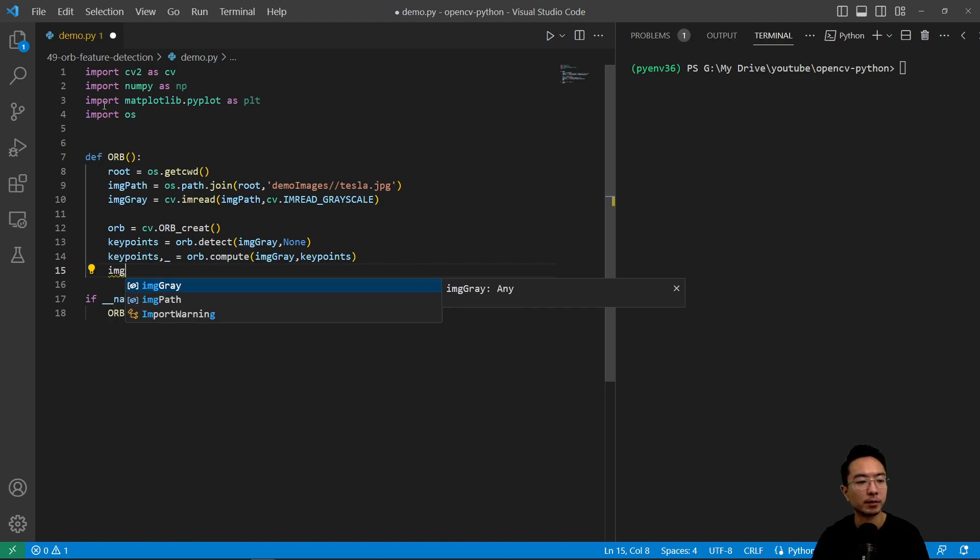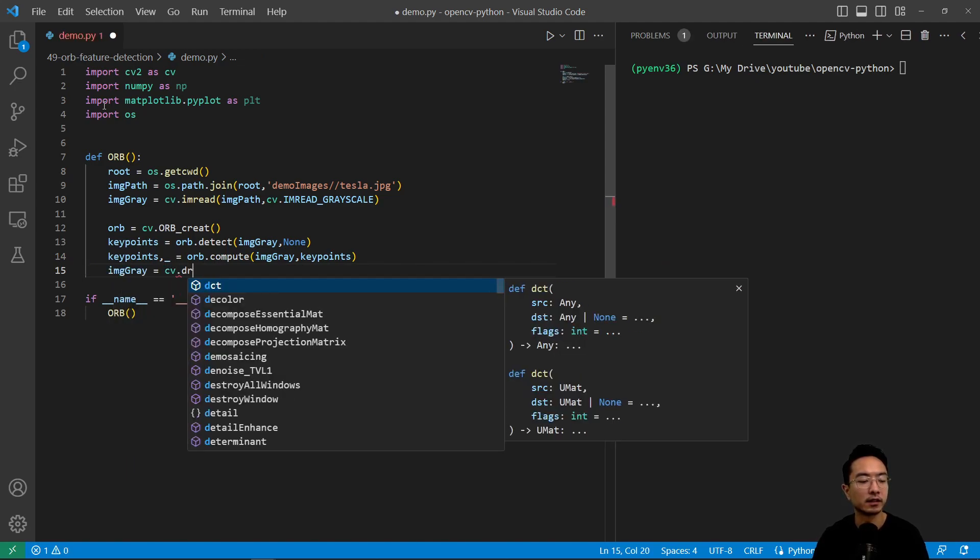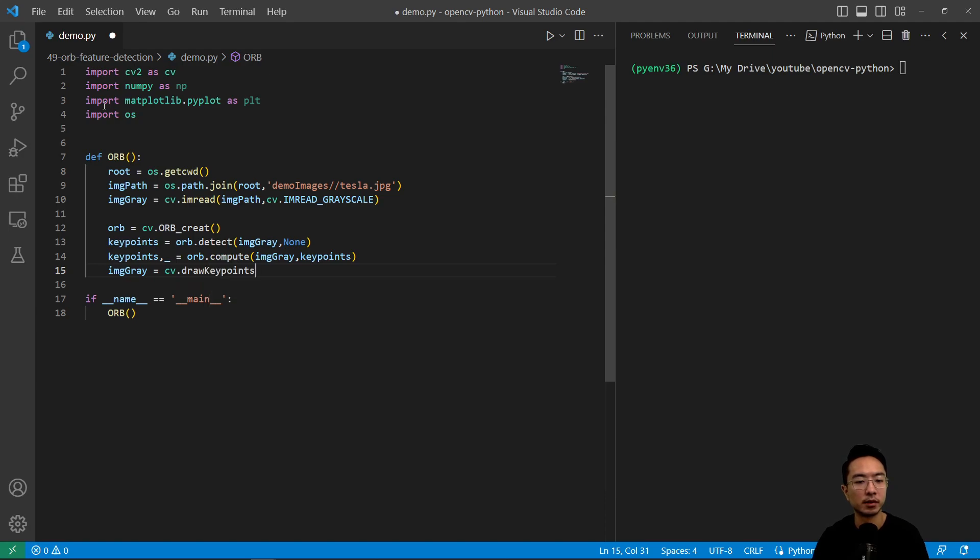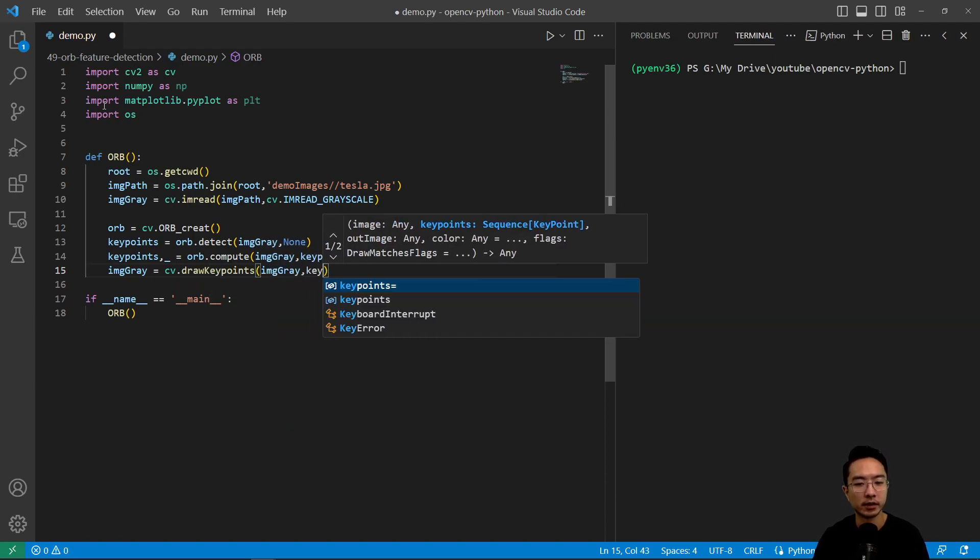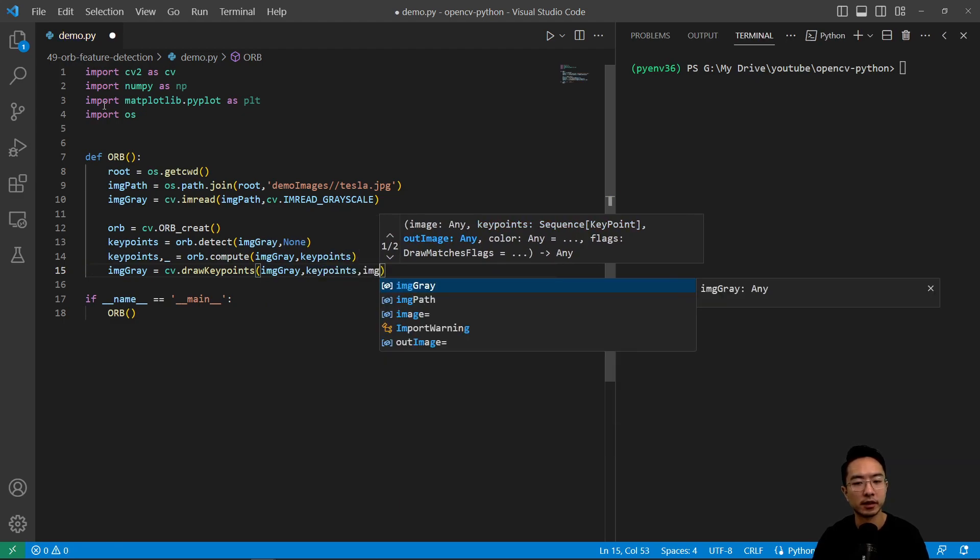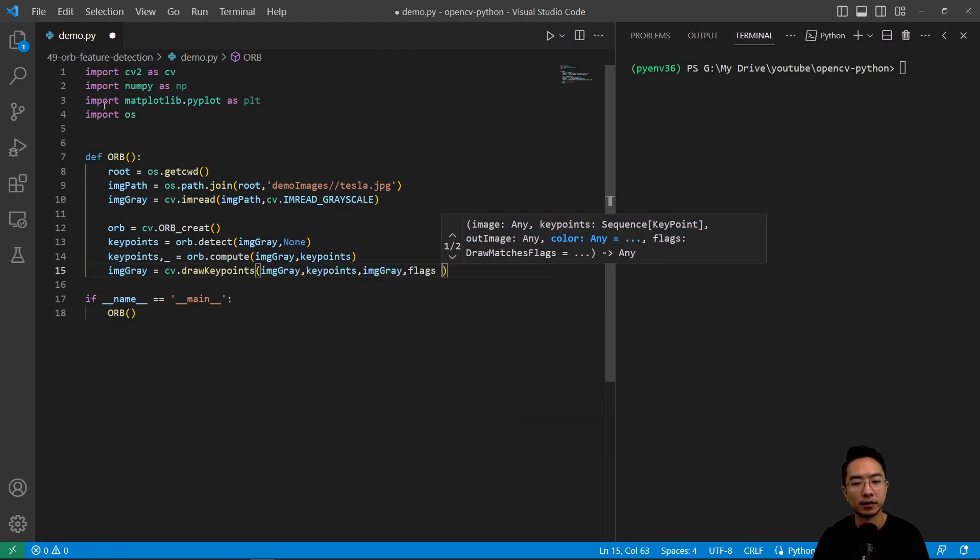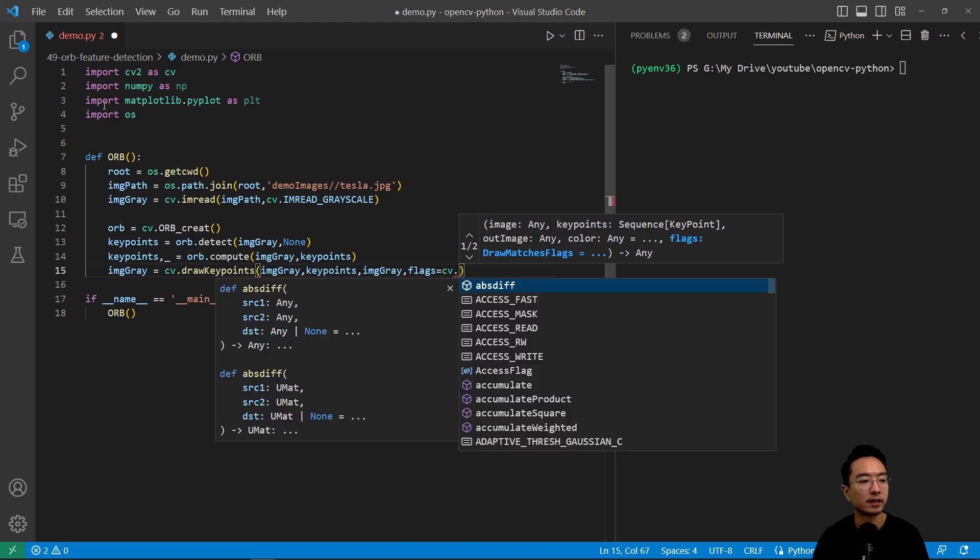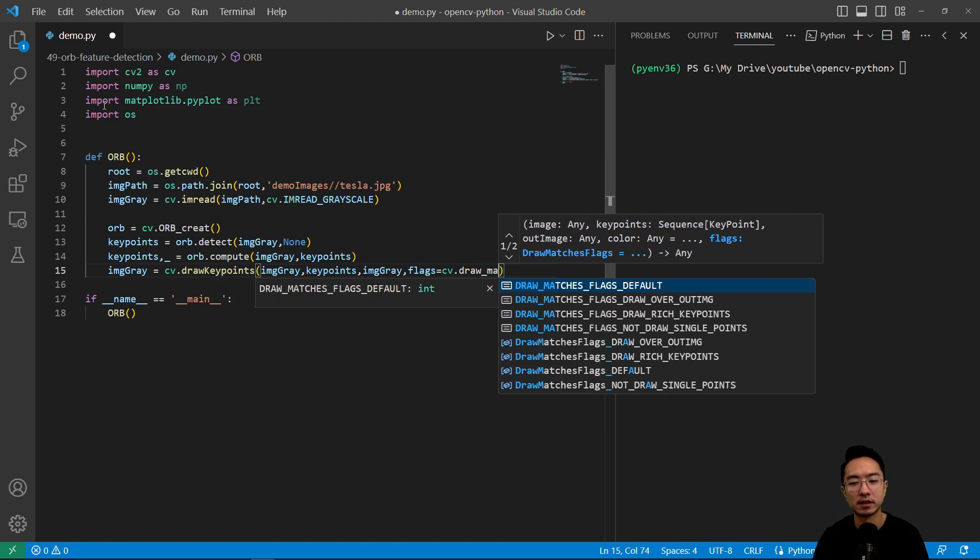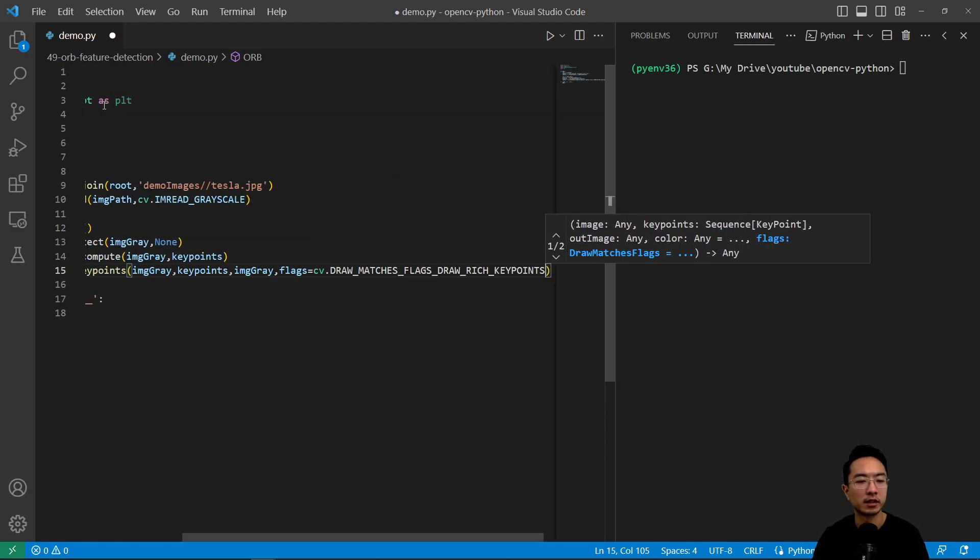Then we have our imagegray here equals cv.drawKeypoints. And we're going to pass in our gray image, our keypoints, our gray image again, and our flags. So it's going to be cv.DRAW_MATCHES_FLAGS_DRAW_RICH_KEYPOINTS.